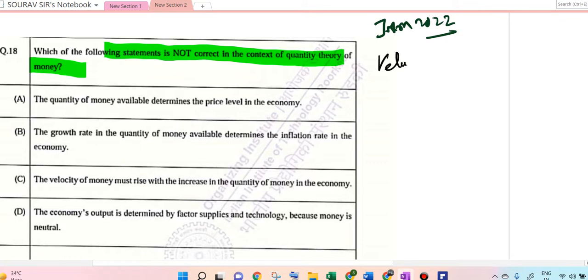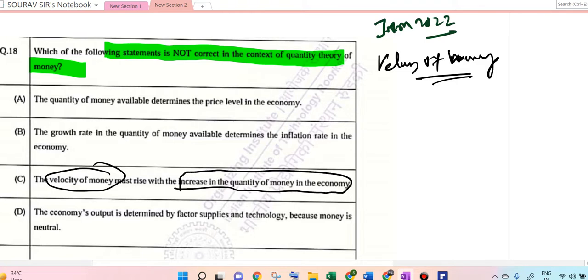Velocity of money is the speed at which money changes hands, and that concept was introduced in this theory first. Here, the velocity of money must rise with the increase in quantity of money in the economy. So this statement is not correct.